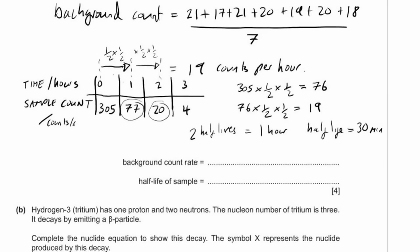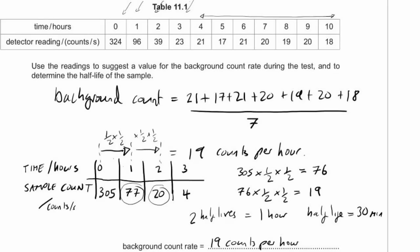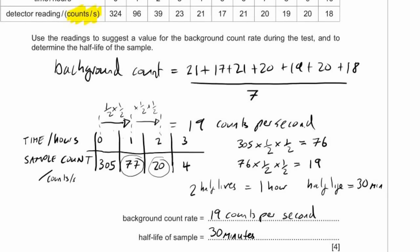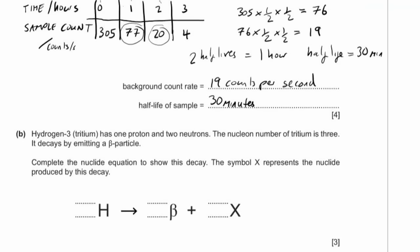Correcting an error: the background count rate was stated as 19 counts per hour, but looking at the table, the readings are in counts per second — the measurements are taken each hour but the count rate is per second. Always double-check units. Everyone makes mistakes — the important thing is to find and correct them.